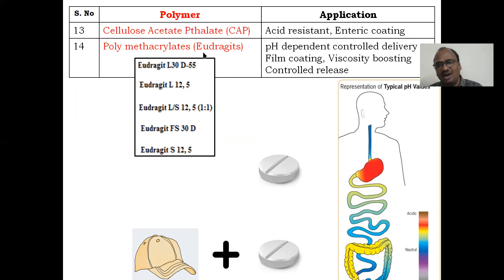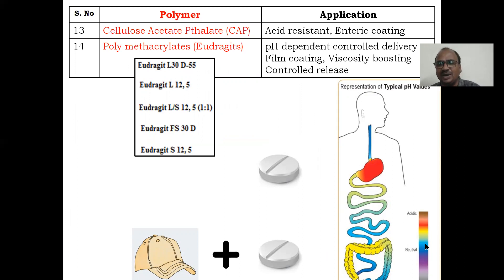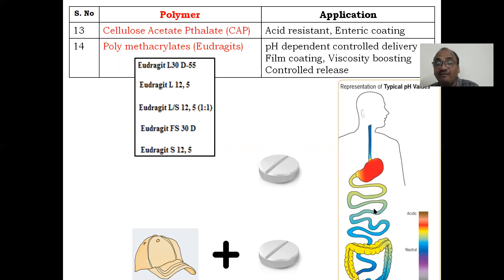Polymethacrylates are called Eudragits. Different grades of Eudragits are available — pH-dependent grades. Our entire gastrointestinal tract has different pH at different regions. So if you want to release medication at a specific site, you use the appropriate grade of Eudragit. Don't prepare a plain tablet; prepare a tablet with Eudragit and select different grades to release the drug wherever you want.